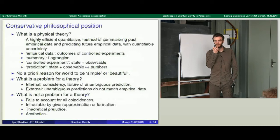On the other hand, there are many things claimed to be problems that I disagree with. I don't think that if a theory fails to account for some coincidences — like two particles happening to have the same mass when masses are free parameters — there's any reason to demand that the theory explain why they are the same. It could be a coincidence. Also, if a particular theory has a well-defined formulation but seems intractable by a given approximation formalism, that's not a problem of the theory. Theoretical prejudice and aesthetics are also not real problems.